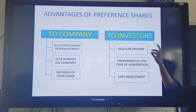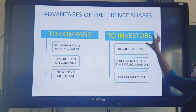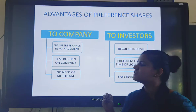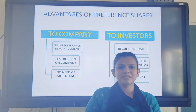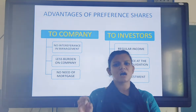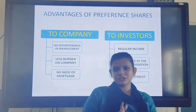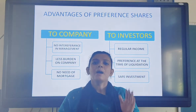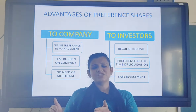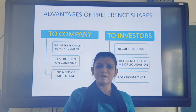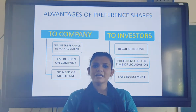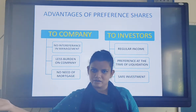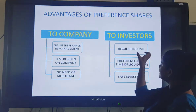Now coming to the advantages of preference shares to the investor. First is regular income. As I said, some preference shareholders receive a fixed dividend decided in advance, whereas equity shares do not have a fixed dividend. Because of this fixed dividend, investors get regular income. Plus, in cumulative preference shares, if there is a loss in one year and dividend is not received, that dividend will be received in the next year when profit is made - ensuring a regular income stream.